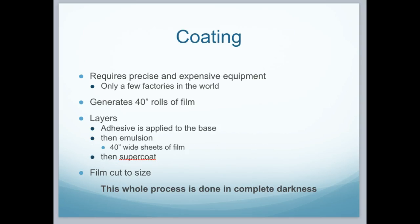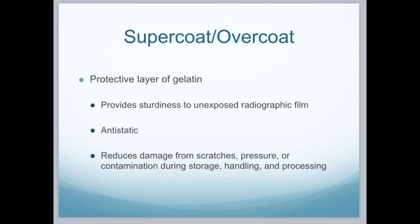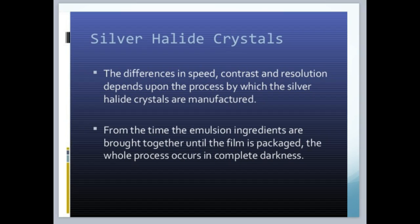The coating requires very expensive equipment and needs to be precise. Only a few factories in the world can produce film. It generates 40-inch rolls of film. The adhesive is applied to the base, then the emulsion, and then a supercoat goes over the top. Then the film is cut to size, and the whole process is done in the dark. The supercoat, or overcoat, is the protective layer of gelatin that provides sturdiness to the radiographic film. It has anti-static properties and reduces damage from scratches, pressure, or contamination during storage.